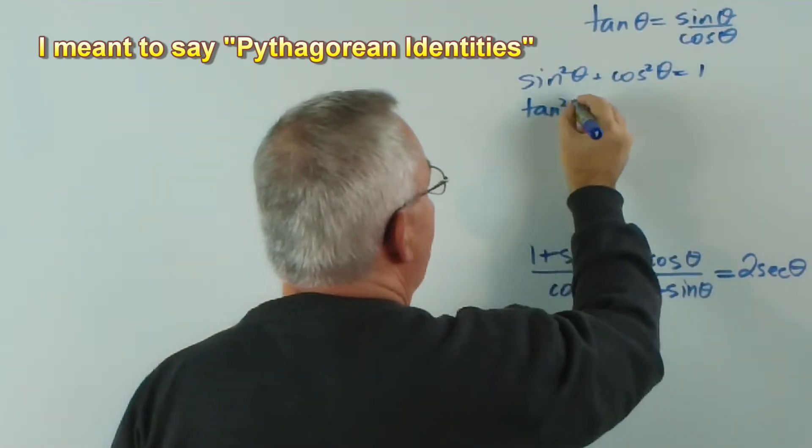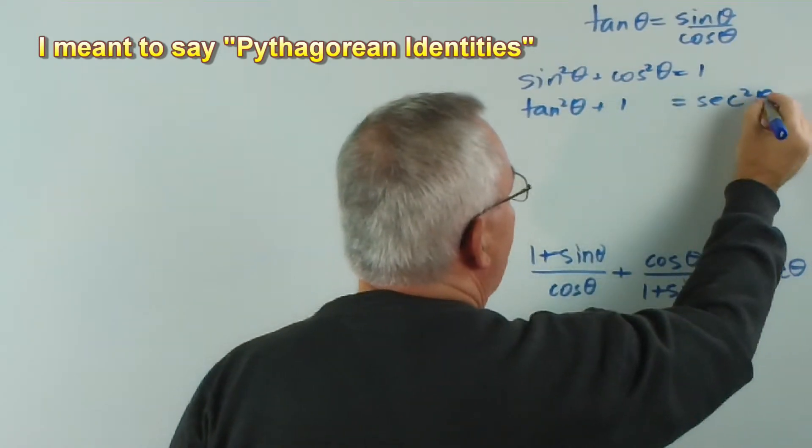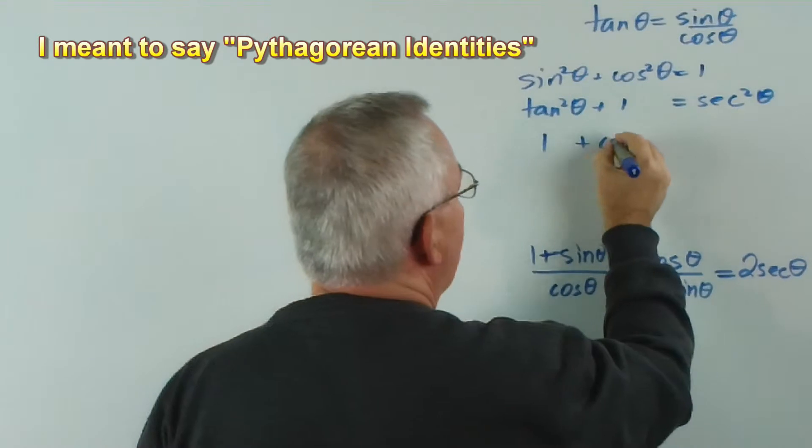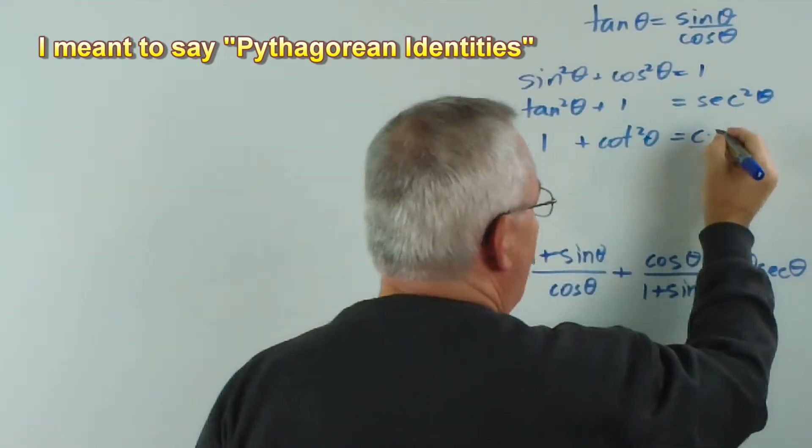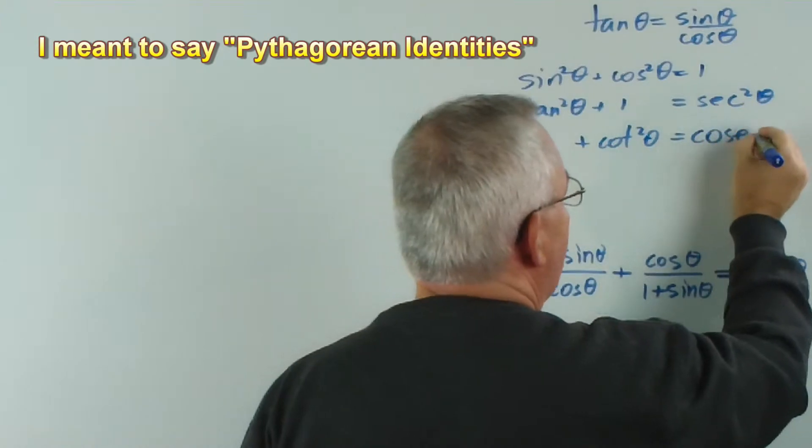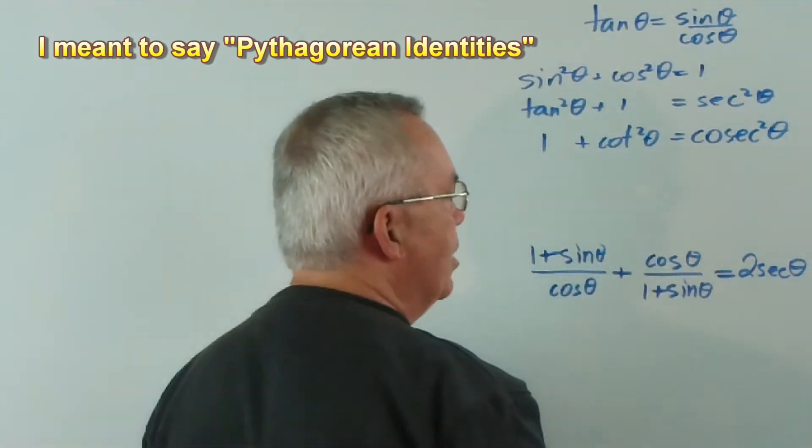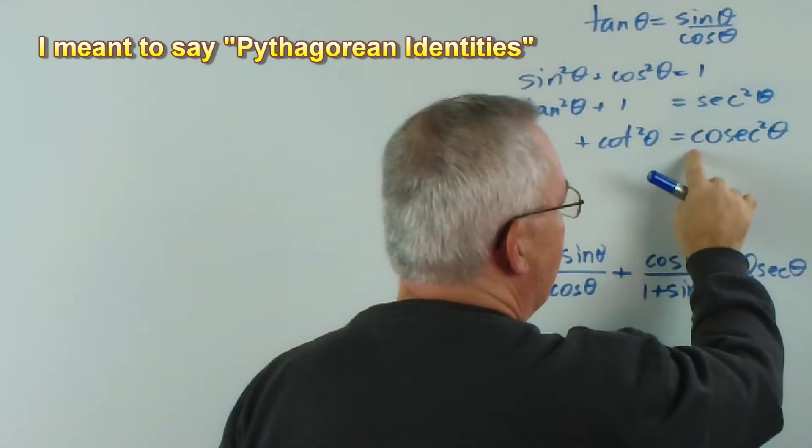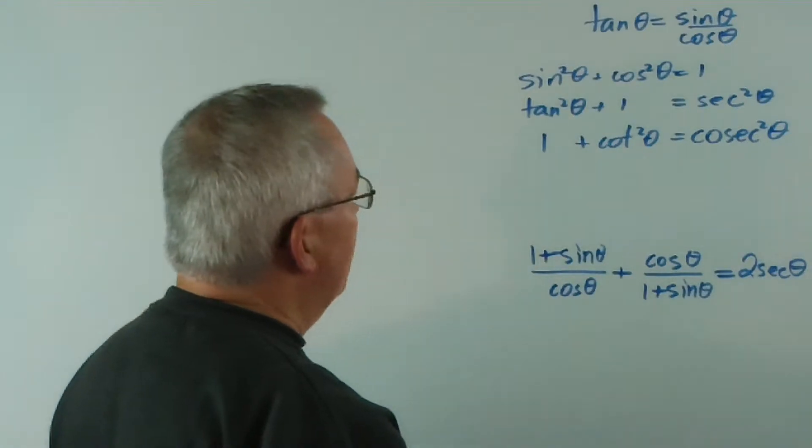tan² θ plus 1 is sec² θ, and 1 plus cot² θ equals cosec² θ. It depends on where you are in the world whether you write it this way or just csc for cosecant, it really doesn't matter.